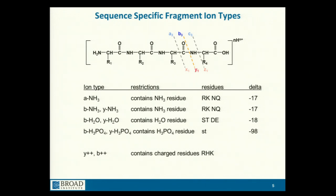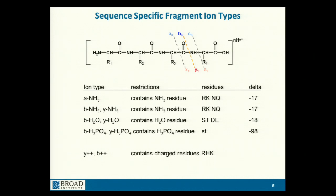But it's still not quite that simple. Each amino acid has a side chain, and some of those side chains can also undergo fragmentation — so you can lose ammonia or water if those groups are present in the side chain. If you have a phosphorylated residue, you can also lose phosphoric acid from the side chain.